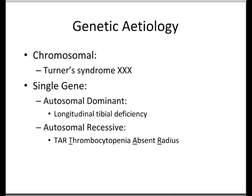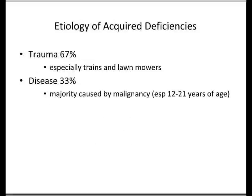In terms of acquired deficiencies of the limbs, the vast majority are from trauma — especially trains and lawn mowers. Disease may account for a third, and the majority of those are caused by malignancy.